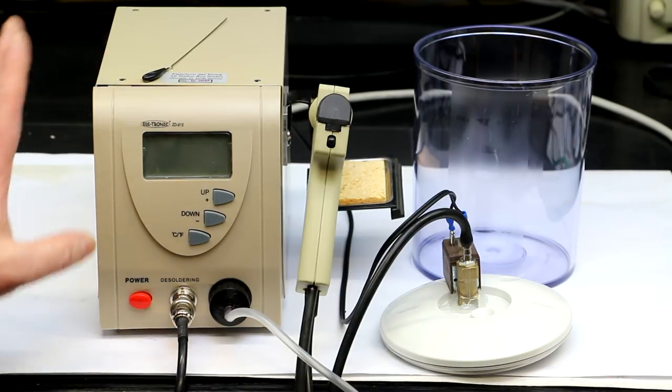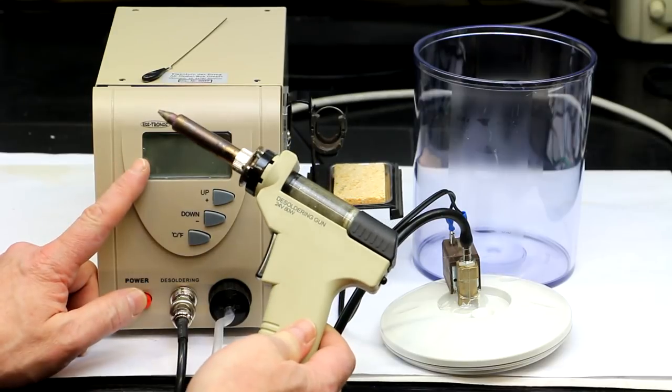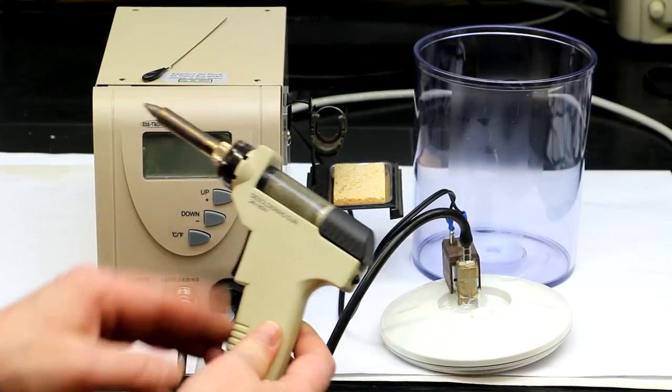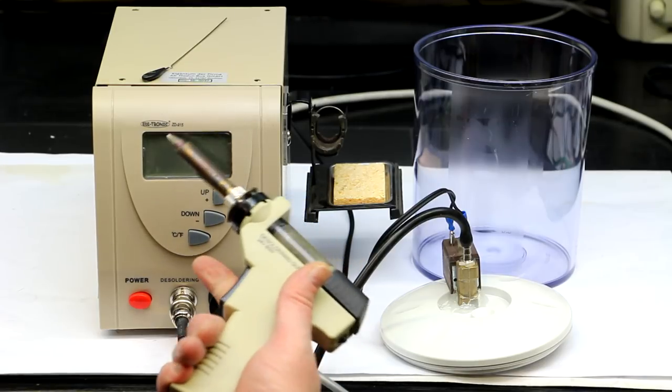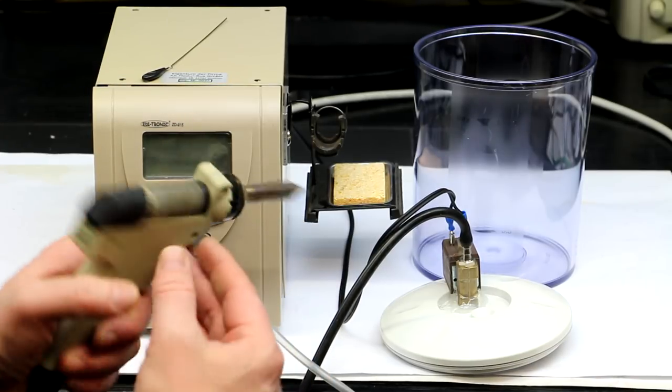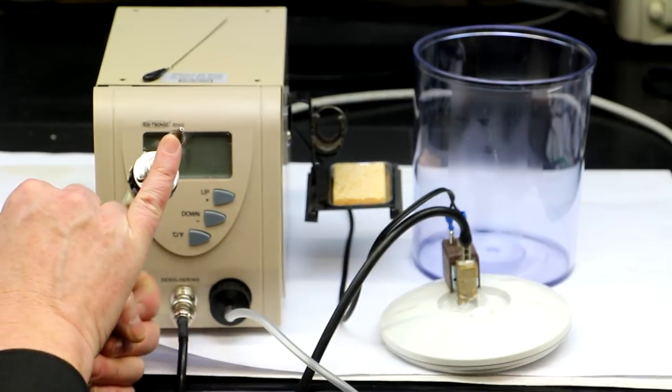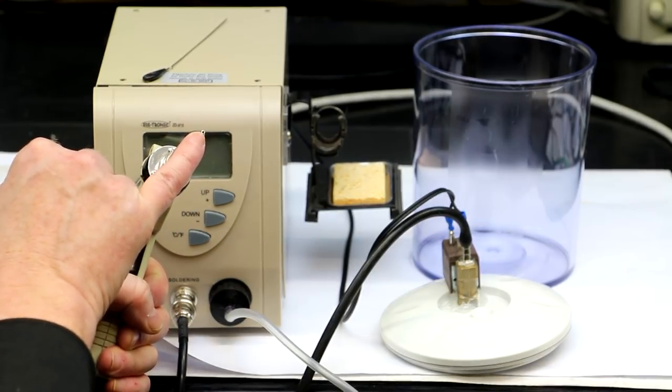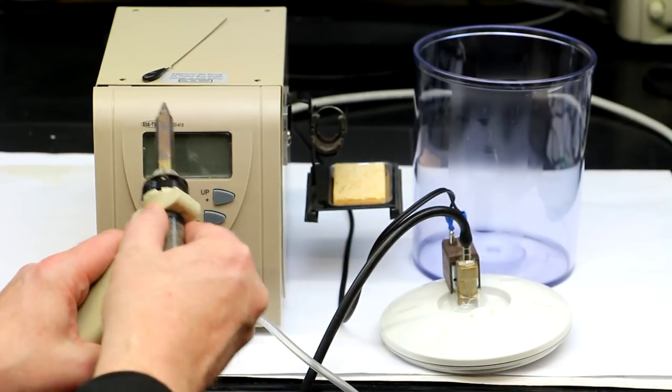Now just a short description. You have this desolder gun, you have a regulated heater element here which you can set up to 450 degrees. And when you pull the trigger switch here, then an internal vacuum pump starts to work and it sucks through this nose cone here, which has a little hole inside. They are also exchangeable with different diameters for different through-hole components.